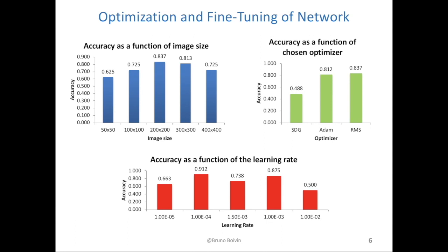Different optimizers were then compared, and although Adam and RMSprop achieved similar accuracy, RMSprop was significantly faster to train so we used that. The learning rate was also varied to determine its optimal value, and one times ten to the negative four was optimal for this model.